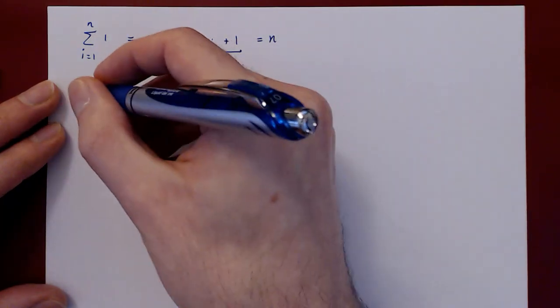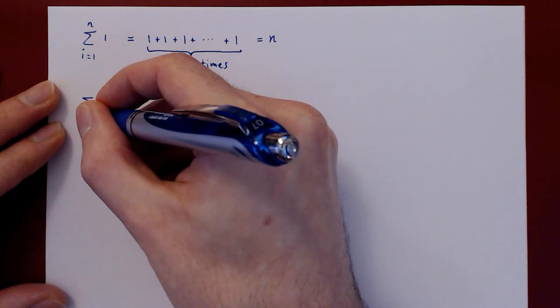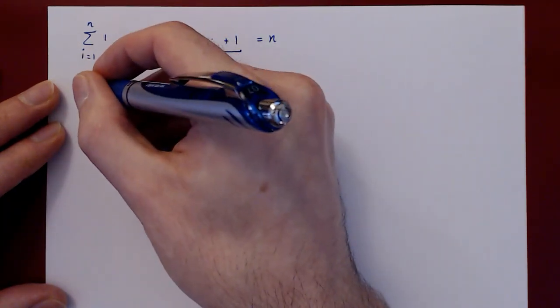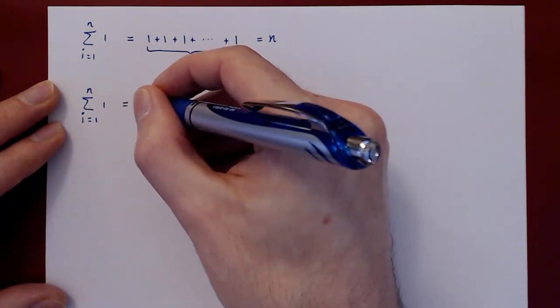And so we now have our first summation formula. If you are summing 1, as i ranges from 1 to n, the result is simply n.